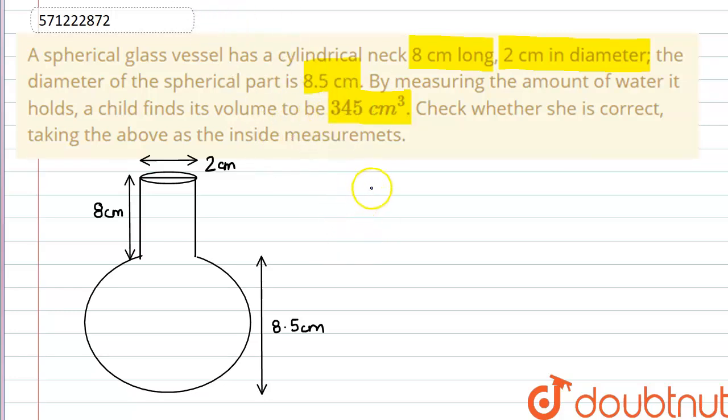So we are given that the radius of cylinder is 1 cm. The height of cylinder is 8 cm.